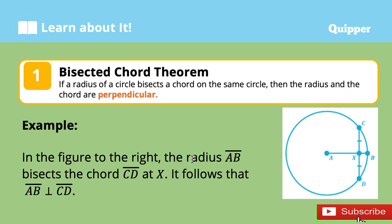First is the bisected chord theorem. This theorem states that if a radius of a circle bisects a chord on the same circle, then the radius and the chord are perpendicular. The word bisect means it divides a line segment into two equal parts. For example, in the figure here, the radius AB bisects or divides the line segment CD, which is the chord, at point X. It follows that line segment AB, or the radius, is perpendicular to line segment CD, or the chord. That's the bisected chord theorem.